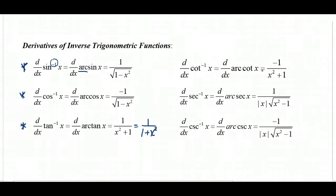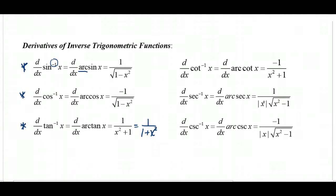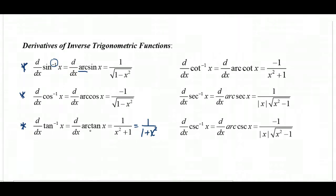The derivative of arc cotangent is the negative of arctangent's derivative. The derivatives of arc secant and arc cosecant are the same as each other, except arc cosecant is negative. Anything starting with 'co' is negative, just like the original trig function derivatives. The derivative of arc secant x is one over the absolute value of x times the square root of x squared minus one. These are the six derivatives; the three on the left must be memorized, especially arctangent, which is most important for future integration.